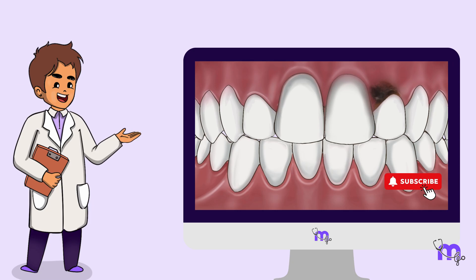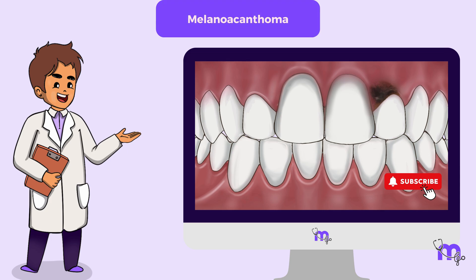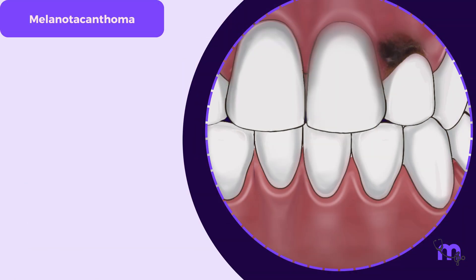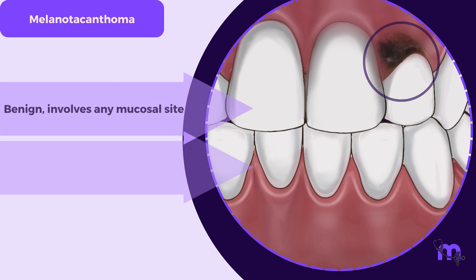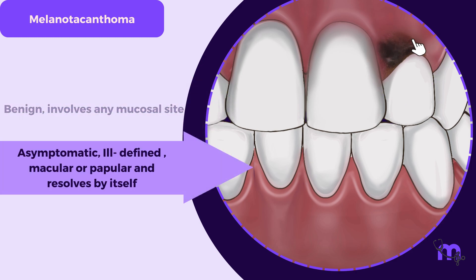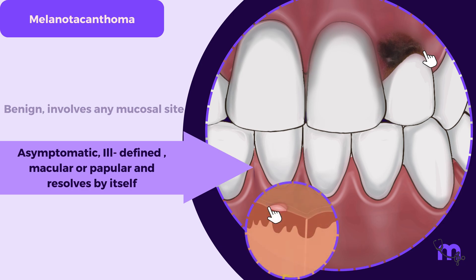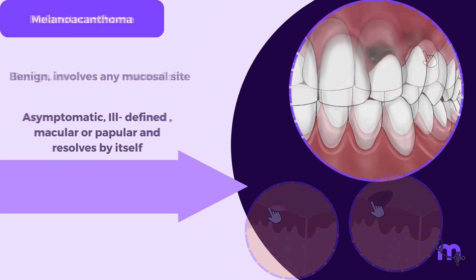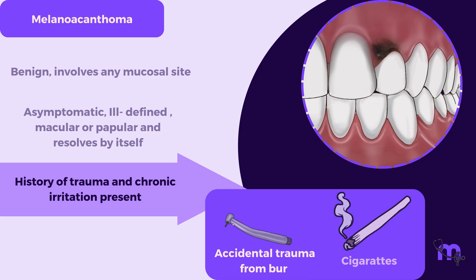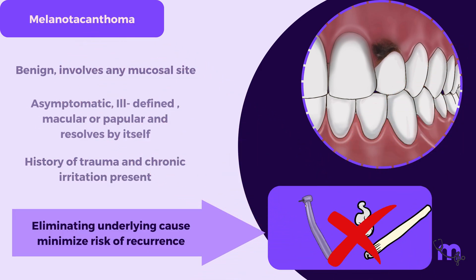The final pigmented lesion on our list is melanoacanthoma. This lesion is always benign and involves any mucosal site. It is always asymptomatic, ill-defined, macular or papular, and mostly resolves by itself. A history of trauma and chronic irritation will be present. Eliminating the underlying cause minimizes the risk of recurrence.